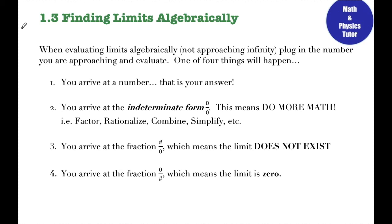An indeterminate form means I need to either factor, rationalize, combine, simplify, etc. — something to change what that expression looks like and then re-evaluate that limit again. The third thing that can happen is once I've plugged in my numbers, I end up with a number over 0 — 5 over 0, 8 over 0, whatever. Something number over 0 means that the limit does not exist. That's a DNE limit.